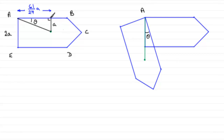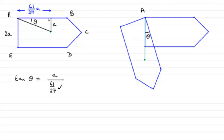We've got the opposite side and the adjacent side, so we can say that tan θ equals the opposite, A, all divided by the adjacent side, 61/27 A. The A's cancel, leaving us with 1 divided by 61/27, which gives 27/61.